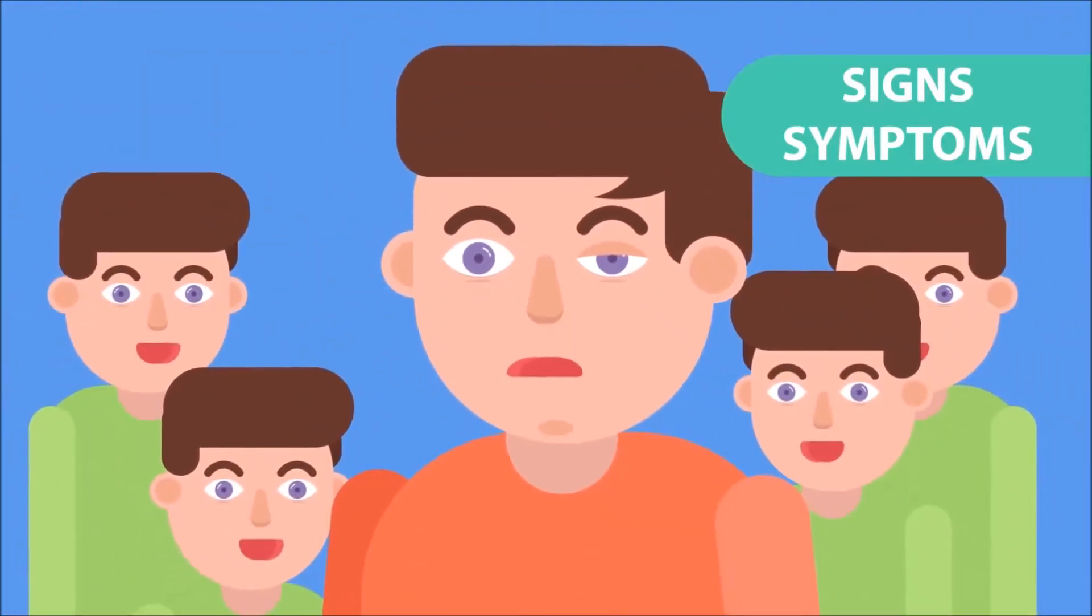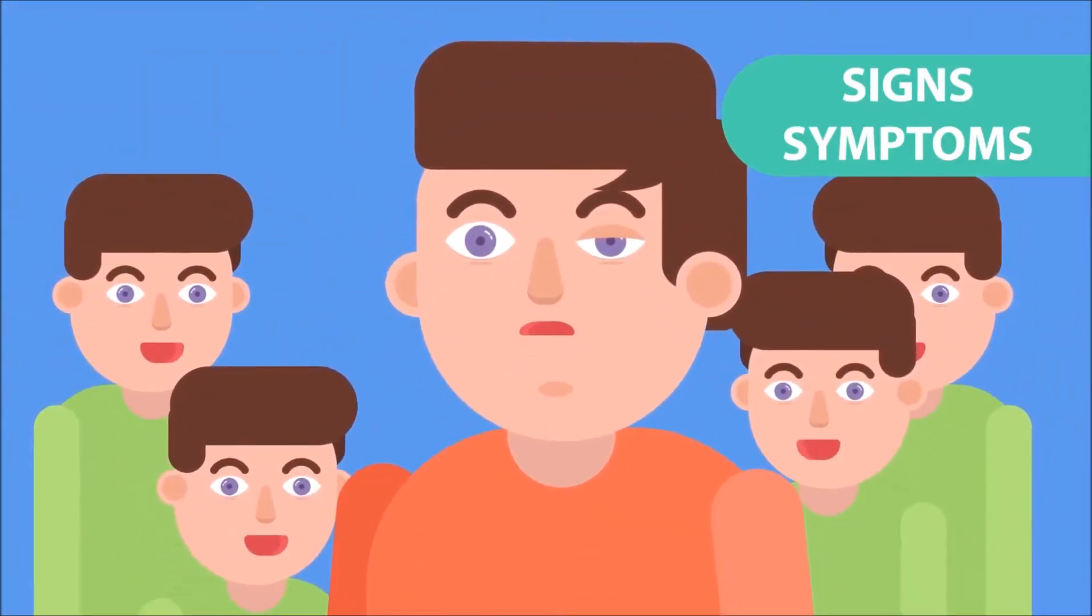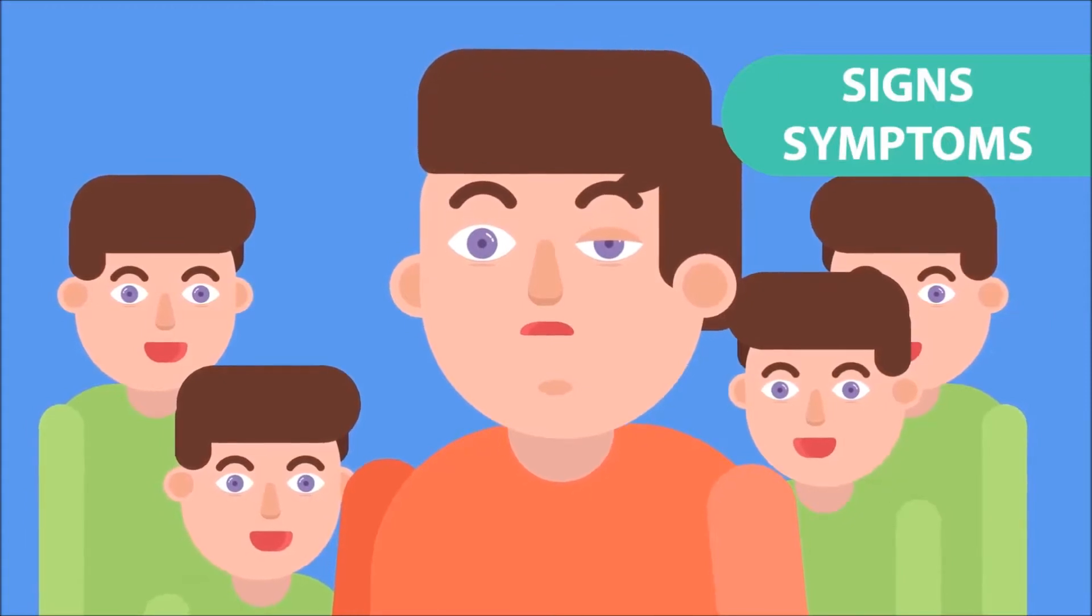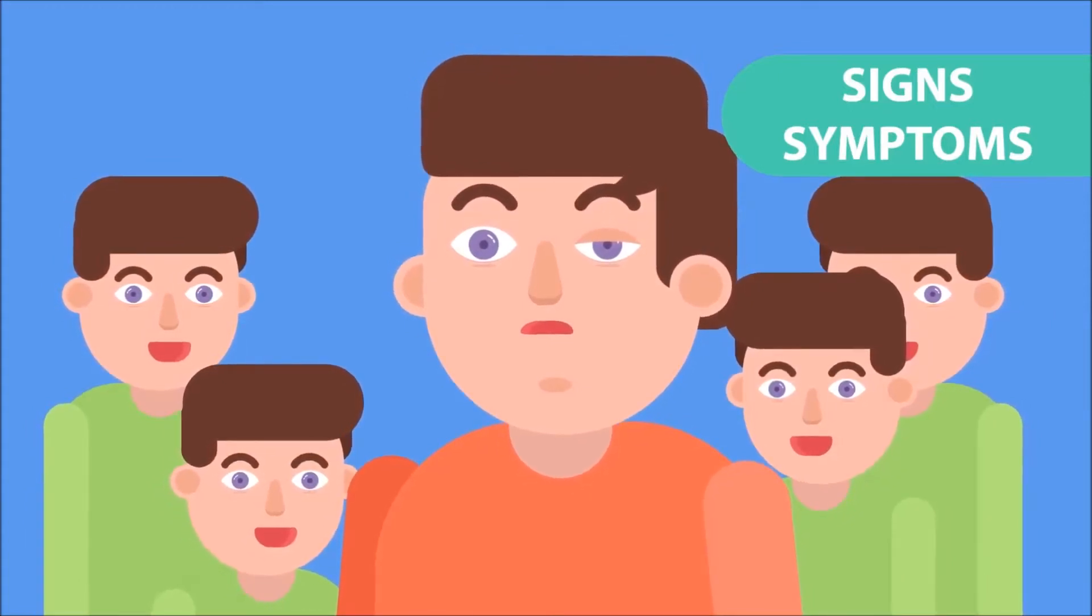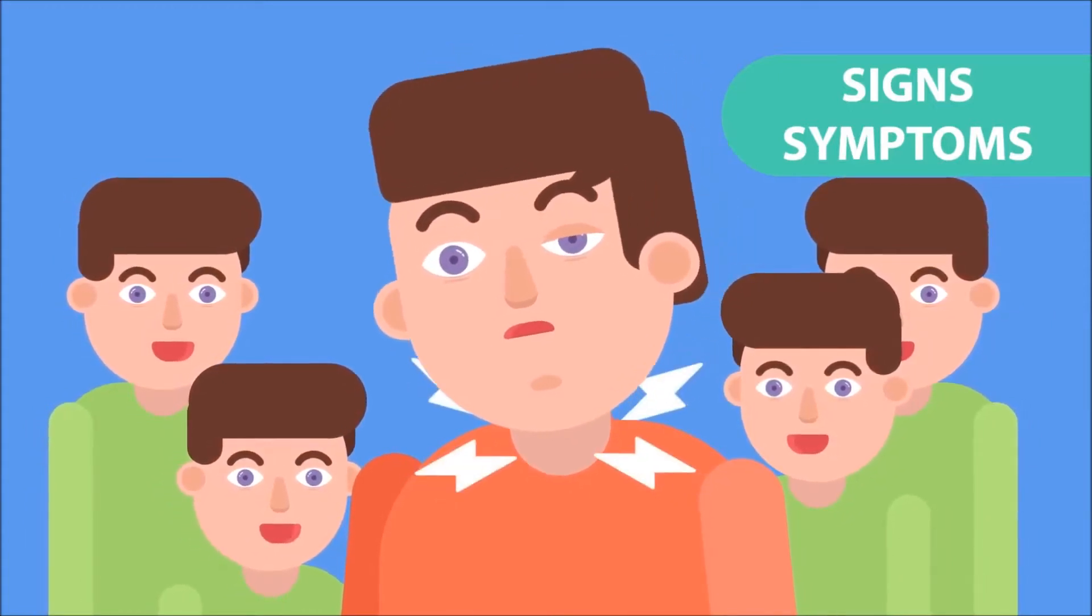A child with ptosis may tip their head back, lift up their chin, or raise their eyebrows to try to see better. Over time these movements can cause head and neck problems.